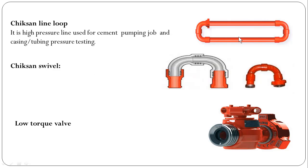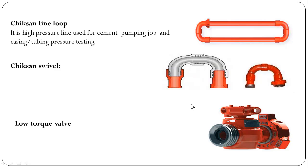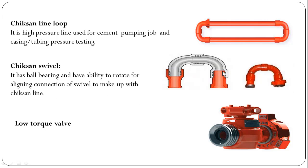Chiksan line loop. It is a high-pressure line used for cement pumping jobs and casing and tubing pressure testing, running from the cement unit all the way to the rig floor to the drill string. Chiksan swivel: it has ball bearings and the ability to rotate for aligning connections to lay out the Chiksan line. Low-top valve: it is a valve which can be easily operated with a bar and is used with the Chiksan line to pressure-test the Chiksan line.